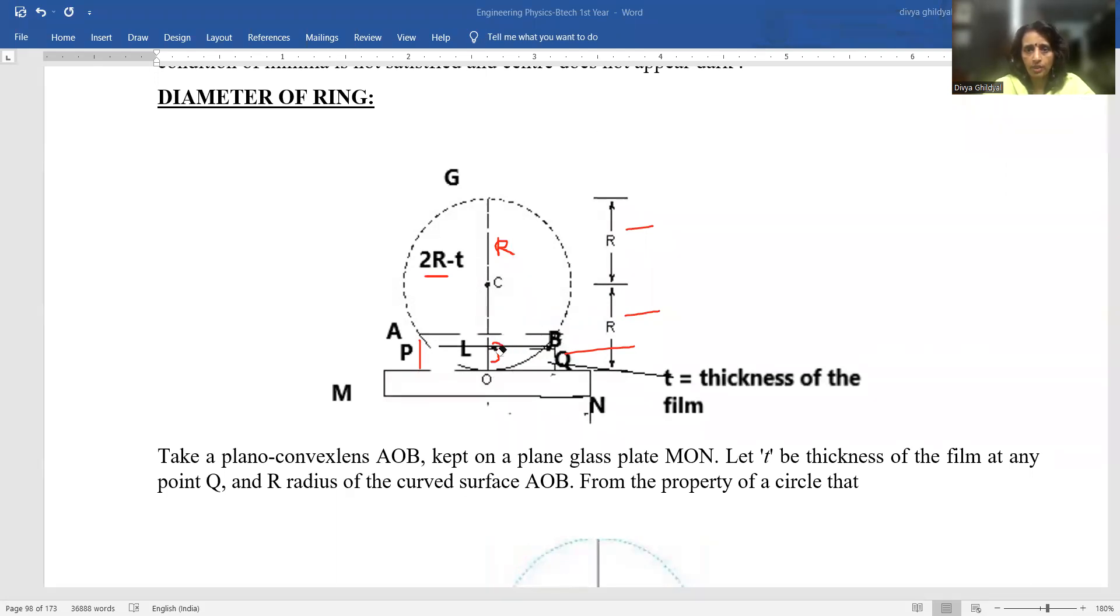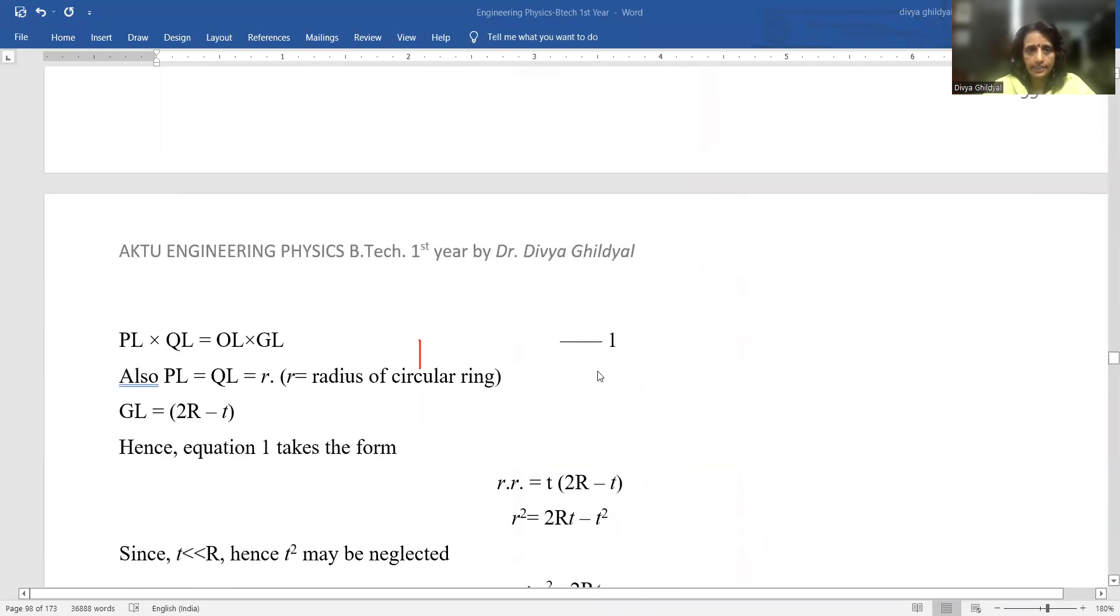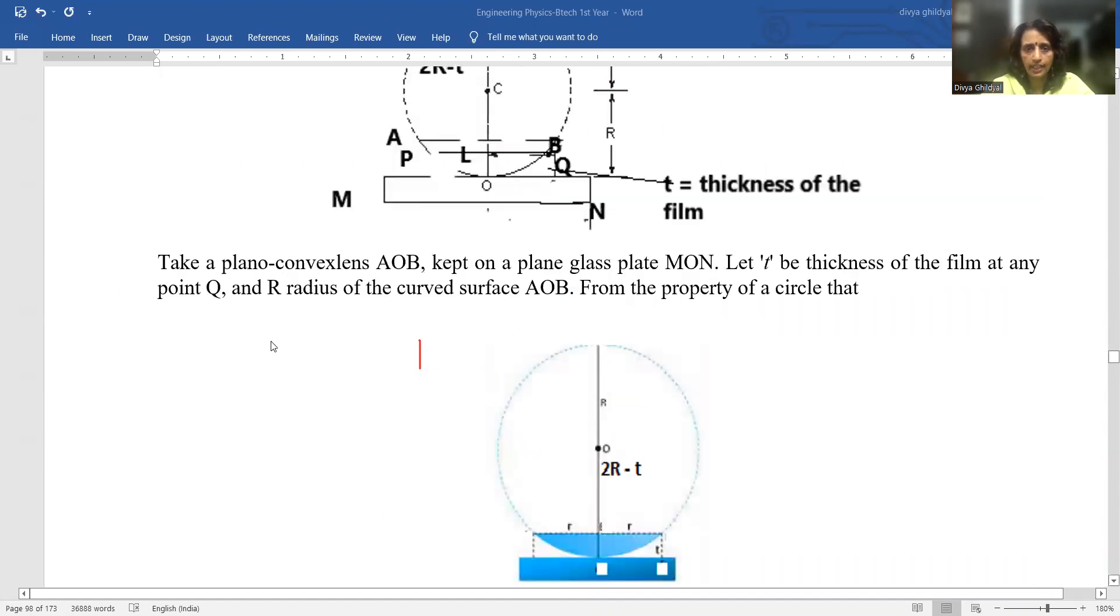Now, we will be using one property of circle, that according to mathematics states that PL into QL is equal to OL into GL.